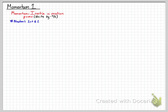Now let's talk about Newton's first and second laws. Newton's first and second laws of motion talk about what forces do to single objects. Newton's third law is talking about a pair of objects, so therefore a system of objects. But Newton's first and second laws are talking about what a force can do to an individual or single object.